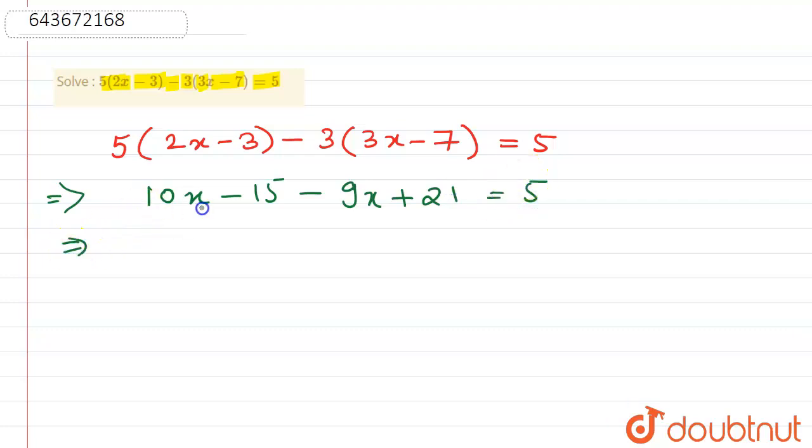So 10x minus 9x gives us x, and plus 21 minus 15 gives us plus 6, so we have x + 6 = 5.